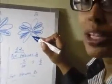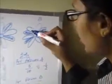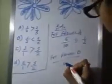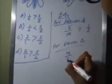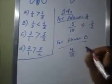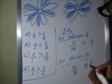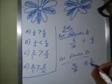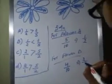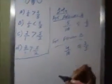But how many are shaded? 1, 2, 3, 4 — only 4 petals are shaded out of the 10. This is 4 by 10, which is equal to 2 by 5.